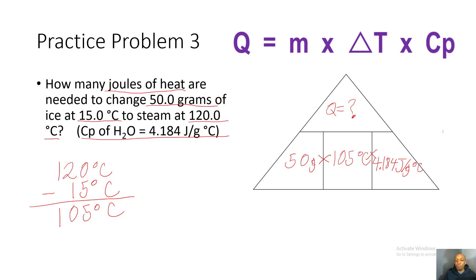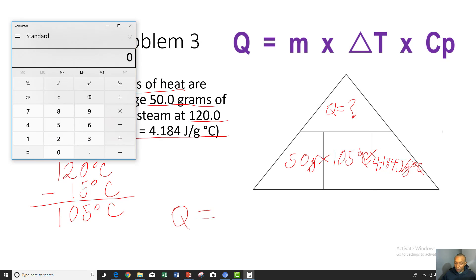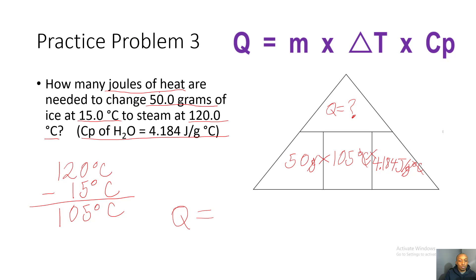Cross out like units: grams cancel grams, and degrees Celsius cancel degrees Celsius, leaving joules. Using the calculator: 50 times 105 times 4.184 gives us 21,966 joules.